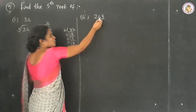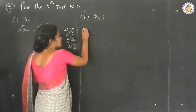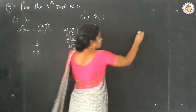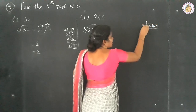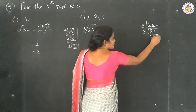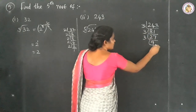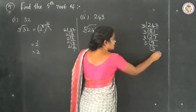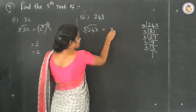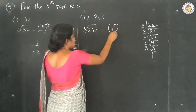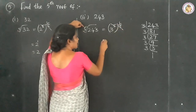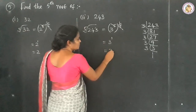Question number 2: the 5th root of 243. Finding the LCM for 243 — 243 equals 3 to the power of 5. So the 5th root of 243 equals (3 to the power of 5) to the power of 1 by 5. The 5s cancel, giving 3 to the power of 1, which equals 3.